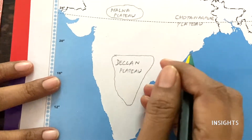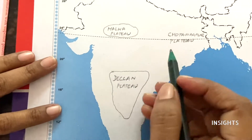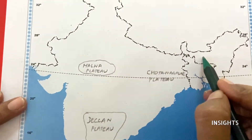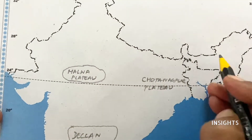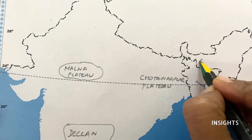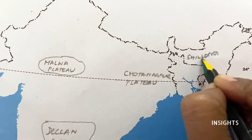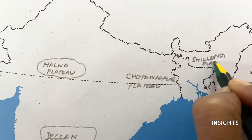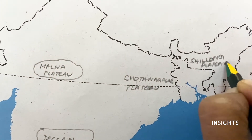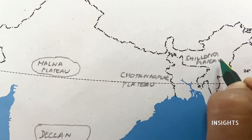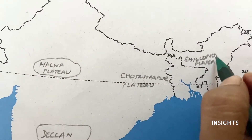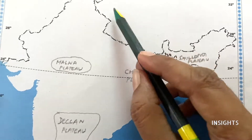This is the Shillong Plateau. Shillong is in that place, so you can just write it. Northeast region - one more plateau that they ask is right on top.